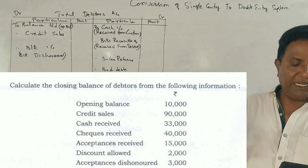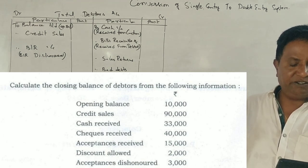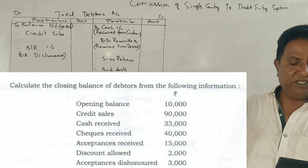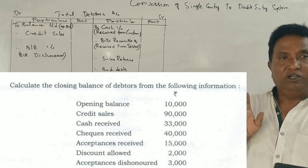Opening balance, credit sales, cash received, cheque received, acceptance received, discount allowed, and acceptance is dishonored.